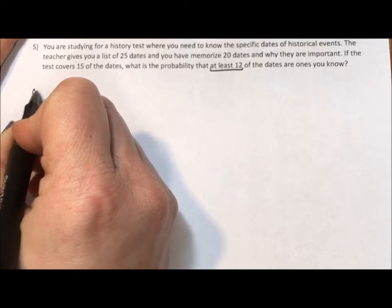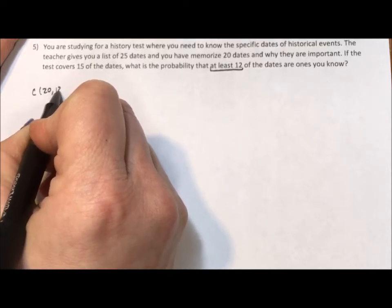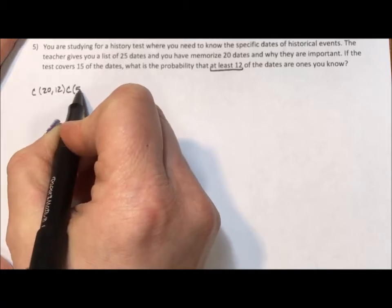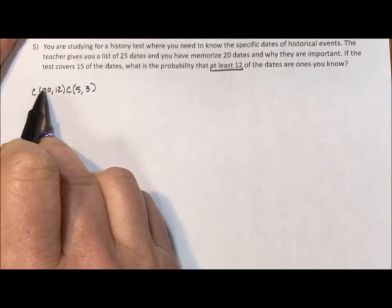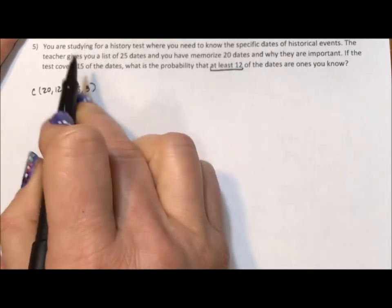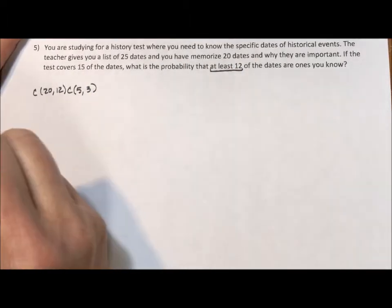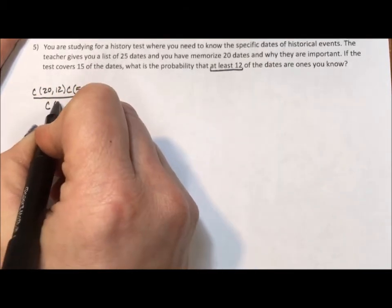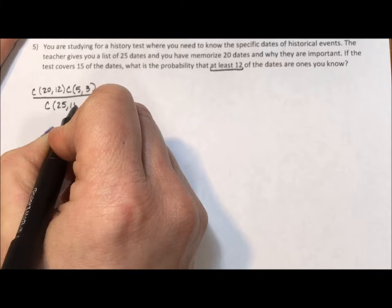it would be the combination of the 20 you know taken 12 at a time times the combination of the 5 you don't know taken 3 at a time. 20 plus 5 is 25. 12 plus 3 is the 15 on the test divided by the combination of all 25 taken 15 at a time.